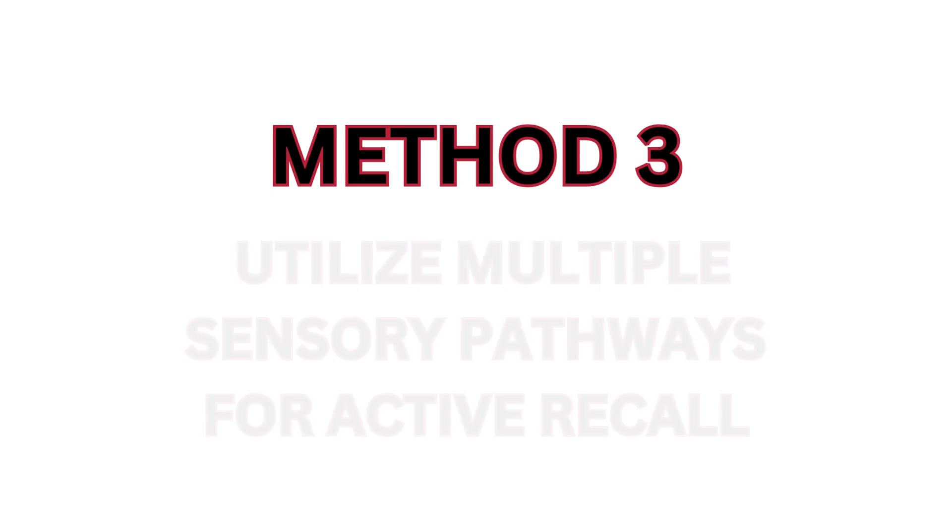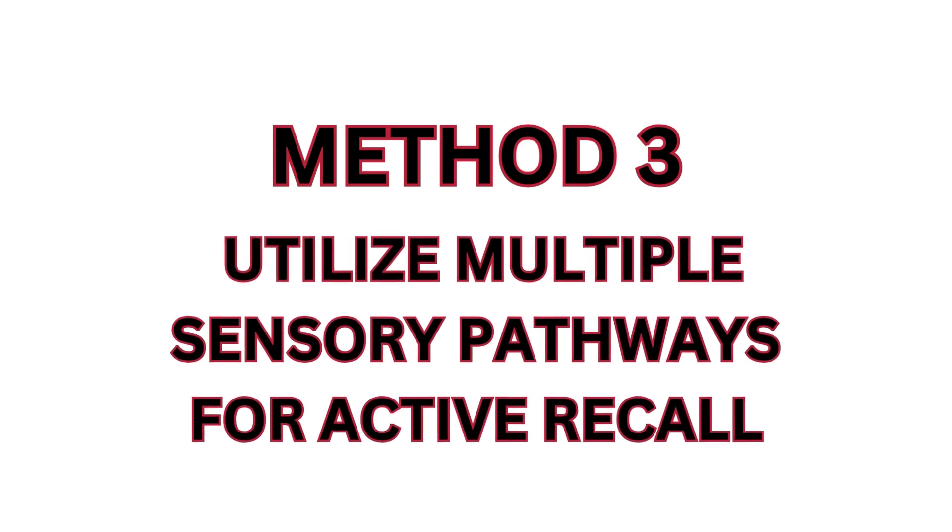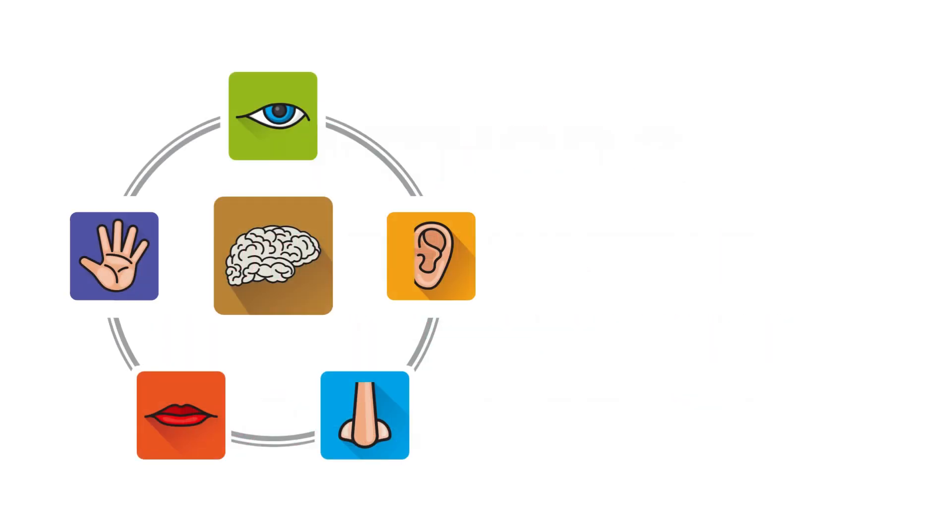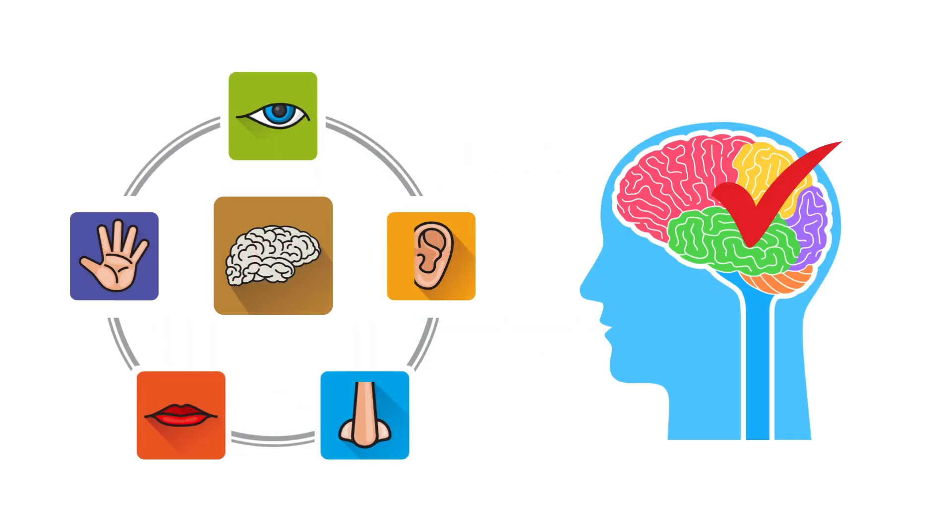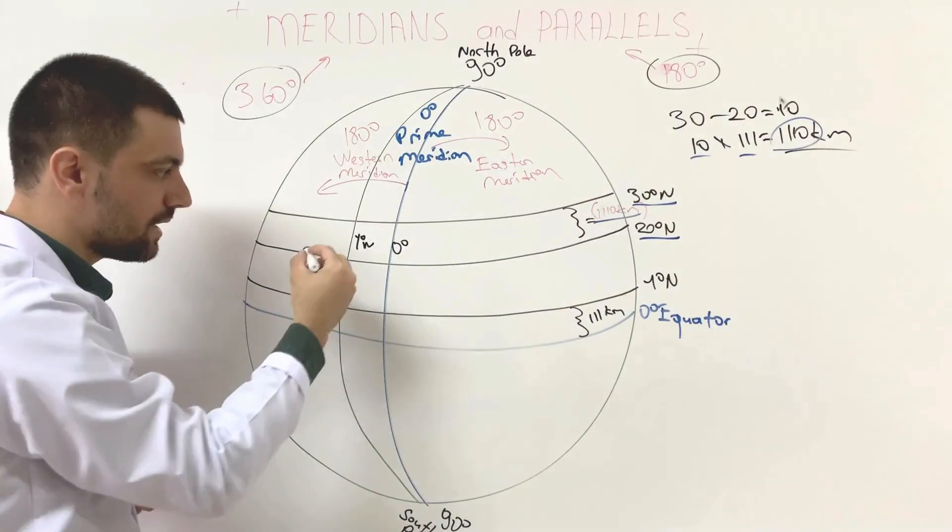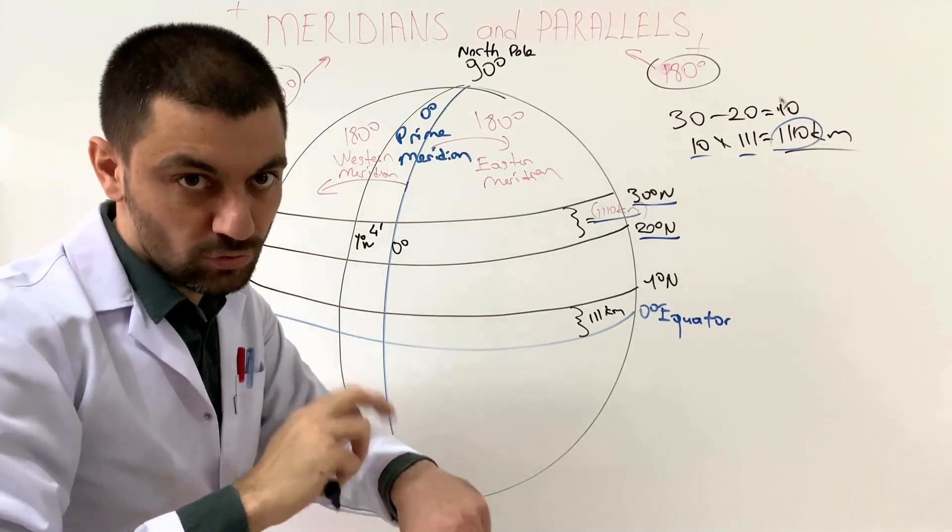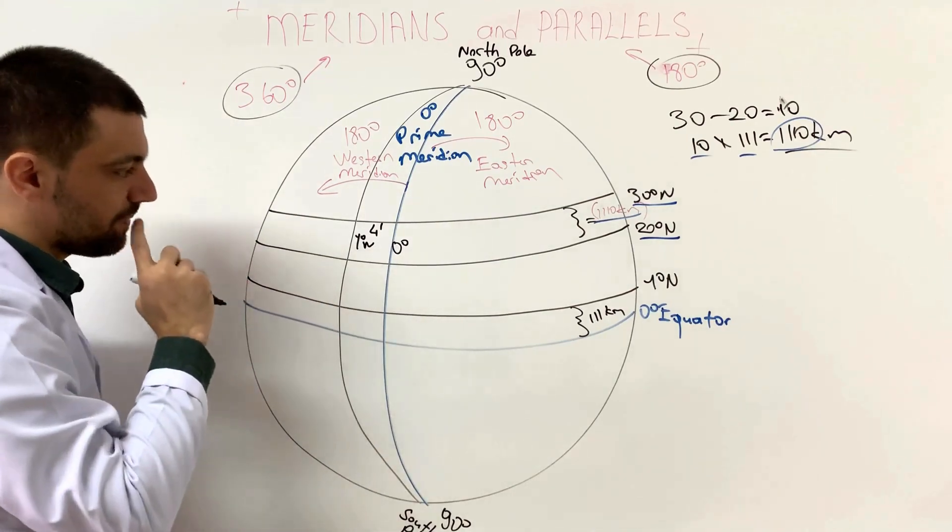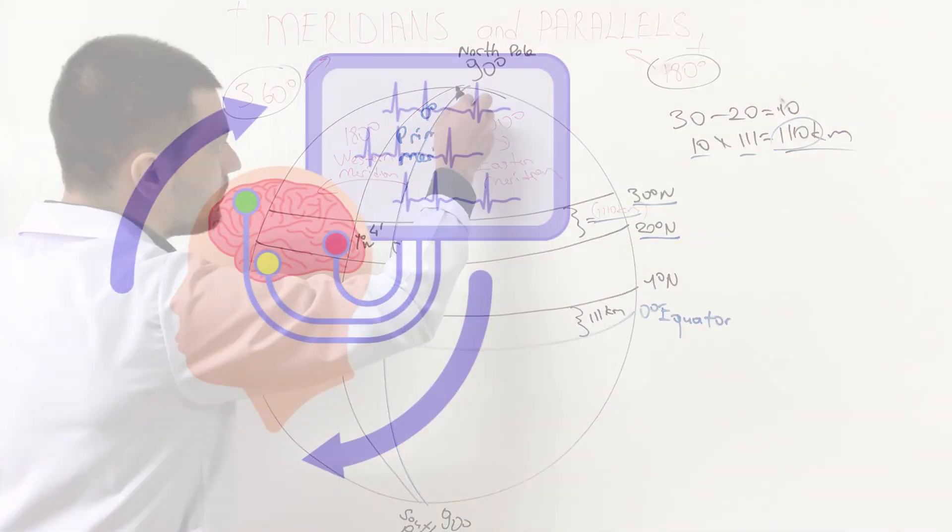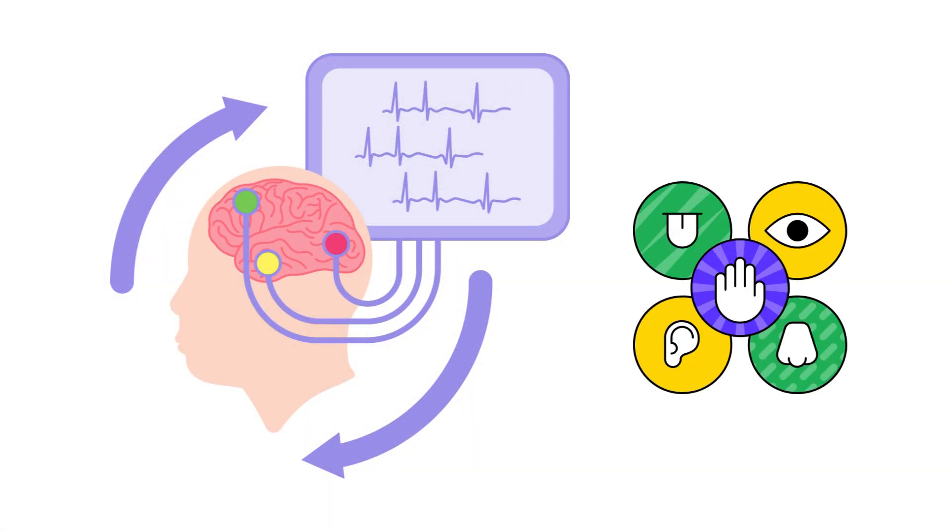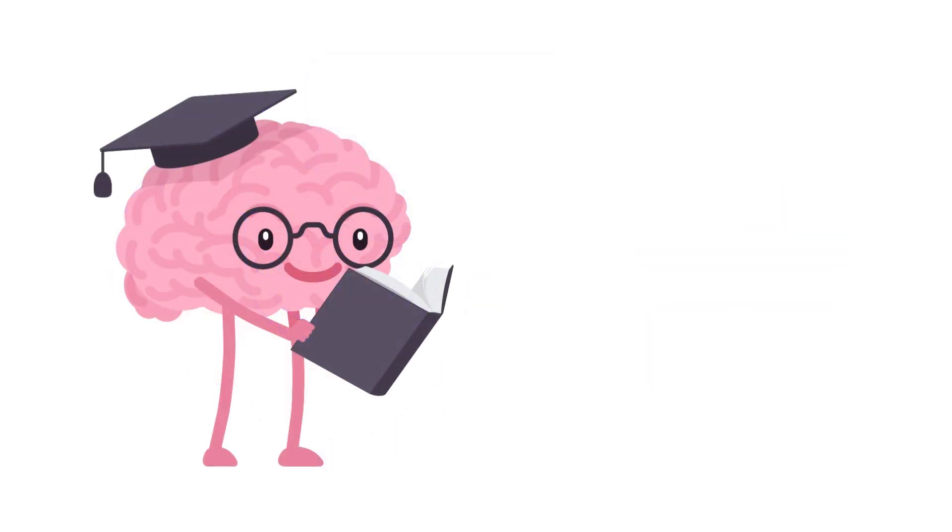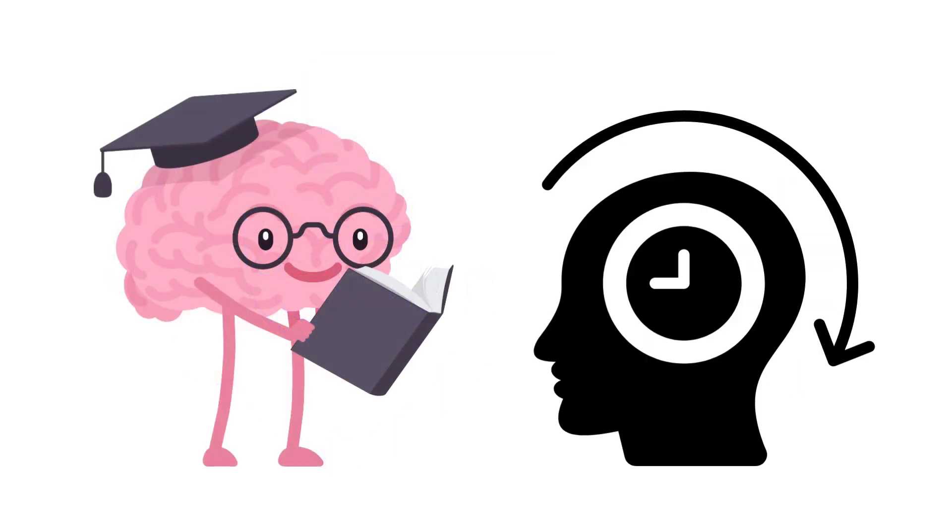Method three, utilize multiple sensory pathways for active recall. Engage different senses to enhance your recall. Don't rely solely on mental recall. Try writing on a whiteboard or speaking the information out loud. You can even pretend to teach the concepts to an imaginary audience. By stimulating your brain through multiple sensory pathways, you strengthen your memory and reinforce the material more effectively.